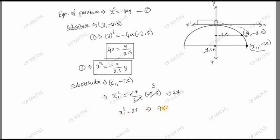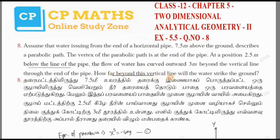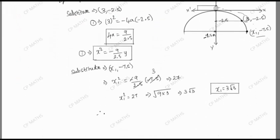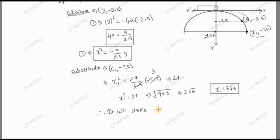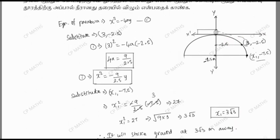27 is 9 times 3, so the square root of 27 is 3 root 3. The final x1 value is 3√3. The final answer is that the water will strike the ground at 3√3 meters away beyond the vertical line. Thank you.